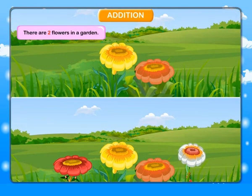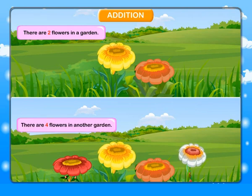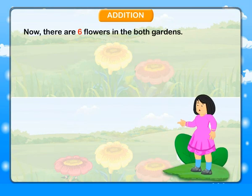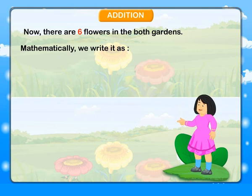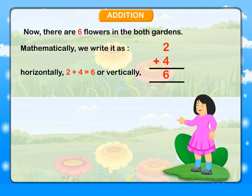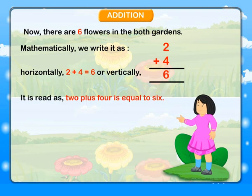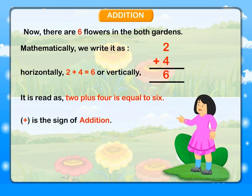Addition. There are 2 flowers in a garden. There are 4 flowers in another garden. Now there are 6 flowers in both gardens. Mathematically we write it as: horizontally, 2 plus 4 is equal to 6; or vertically, 2 plus 4 is equal to 6. Plus is the sign of addition.